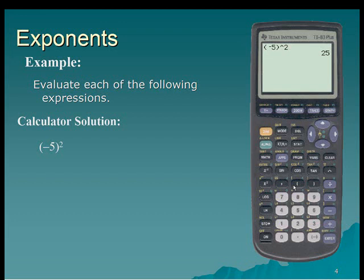Also note that there is a quick square key on the calculator. So again I'll put in a begin parenthesis and negative 5, but this time use the built-in squared key, for the same result of 25.